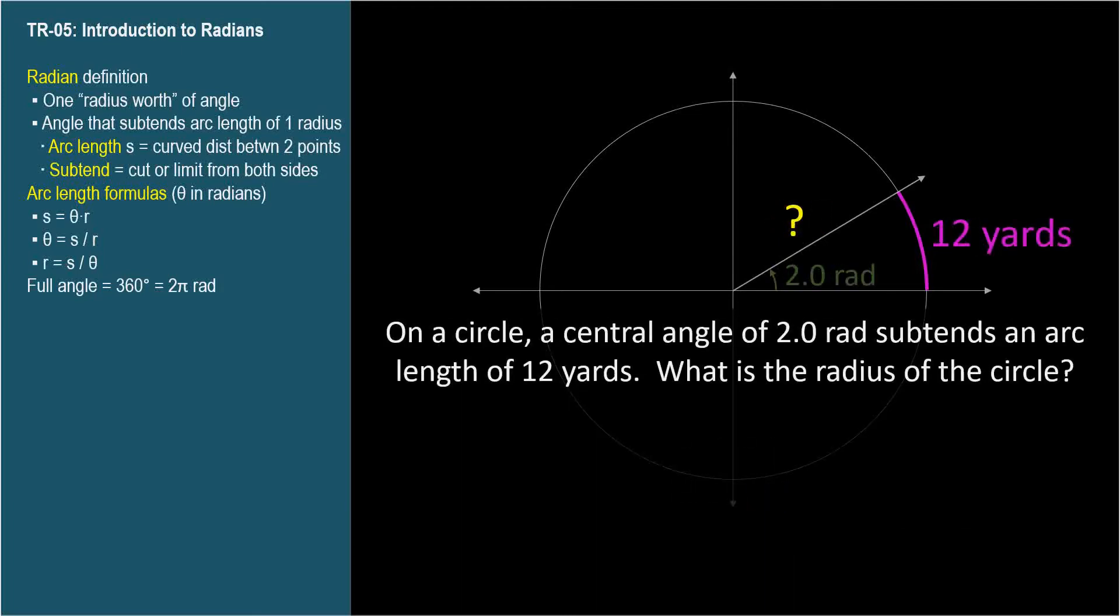One more. On a circle, a central angle of 2 radians subtends an arc length of 12 yards. What's the radius of the circle? Now this picture is absolutely not to scale. In fact, two radians is an obtuse angle. But we'll trust our equations and not our eyes. This time, we're asked for the radius, so rewrite the equation to solve for r. r equals arc length divided by theta.